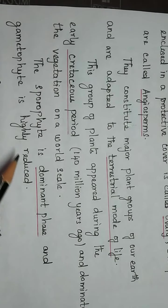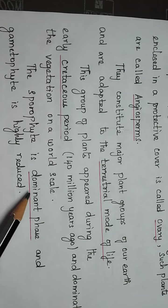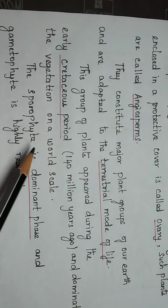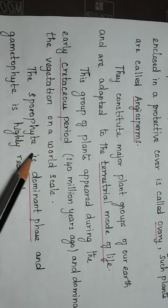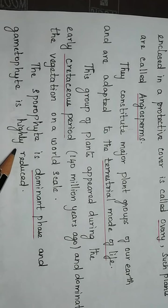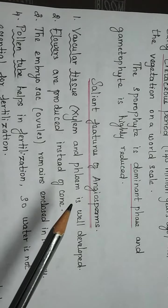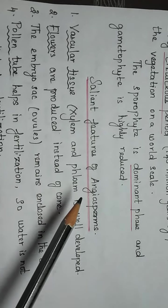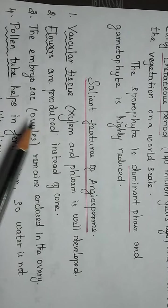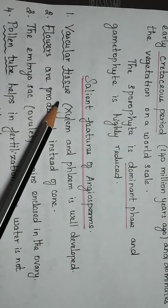In angiosperm plants, the sporophyte is dominant and the gametophyte is highly reduced in nature. Now we can see what are the salient features of angiosperms. The first salient feature is the presence of vascular tissues.